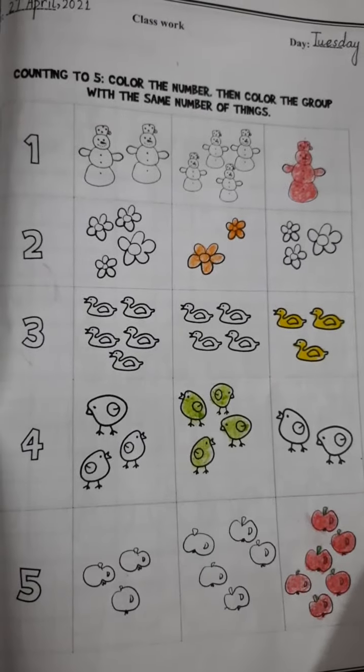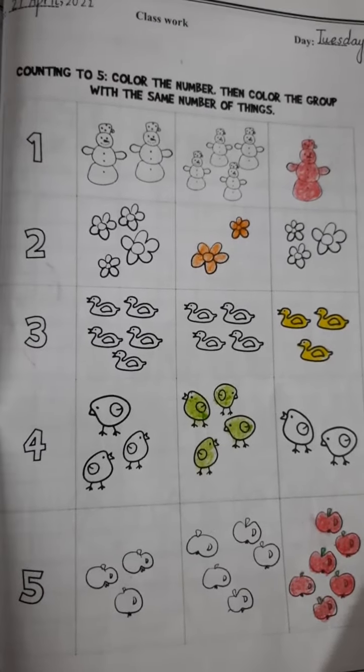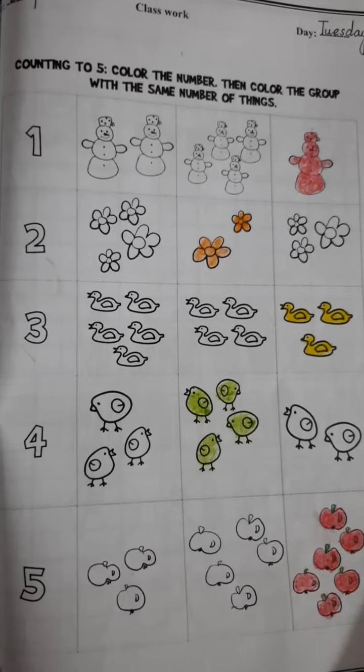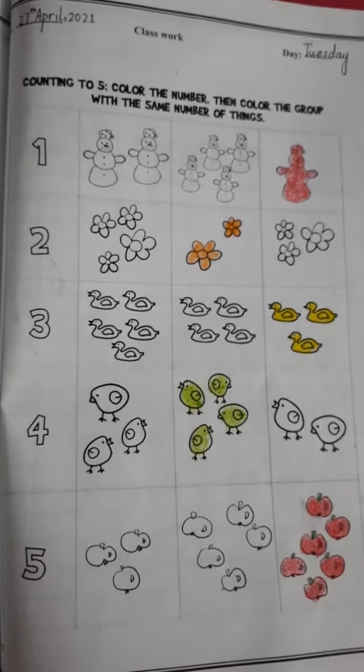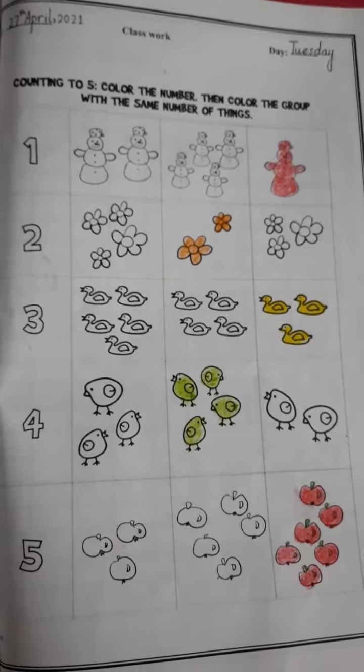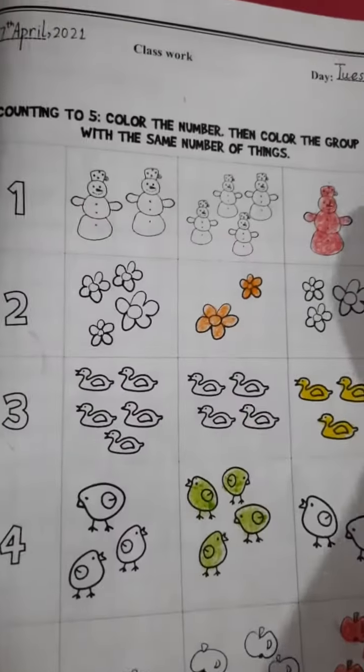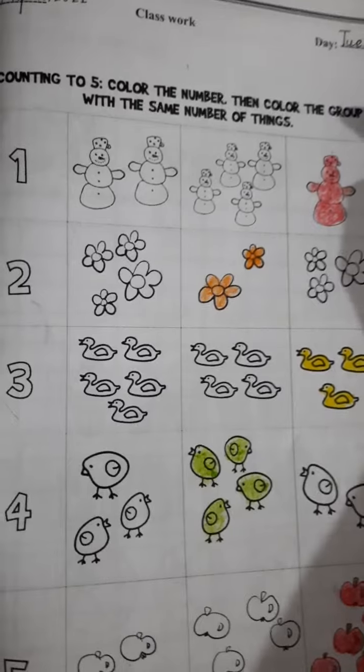Auzubillahi minashatani rajim, Bismillahir rahmanir rahim. Okay, let's start our working. Today our topic is counting to five. Color the number, then color the group with the same number of things. These are things and these are numbers.